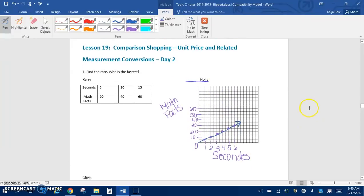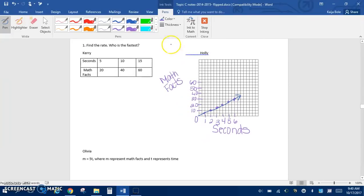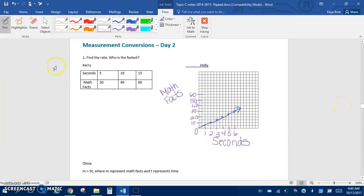Alright, so example one says define the rate, who was the fastest. So we have a table, we have a graph, and then down here for Olivia, we have an equation. Okay, so first we're going to look at the table.